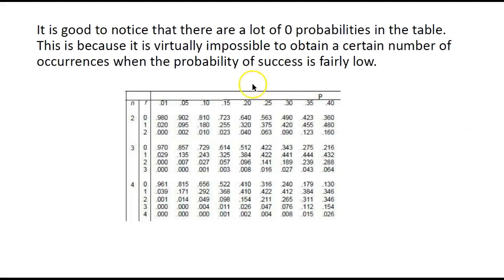Lastly, if you look in the table, you will see a lot of zeros. This comes because some probabilities are nearly impossible.